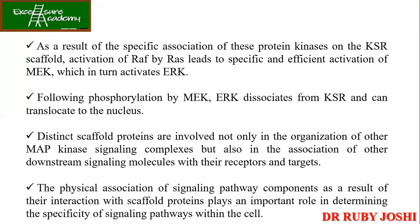As a result of specific association of protein components on the KSR scaffold, activation of RAF by RAS leads to specific and efficient activation of MEK, which in turn activates ERK. Following phosphorylation by MEK, ERK dissociates from KSR and can translocate to the nucleus. These scaffold proteins are involved not only in organizing MAP kinase cascades but also in association with other downstream signaling molecules, determining the specificity of signaling pathways — directing toward cell proliferation or cell death.